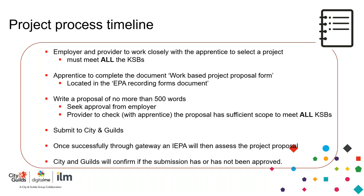Regarding the project process timeline: the employer and provider need to work closely with the apprentice to select a project. There's no point in the provider and apprentice working together if it can't be fulfilled or implemented within the employer's premises. It's really important that all three parties work closely together. The apprentice then completes the work-based project proposal form, located within the EPA recording forms document, where the project is highlighted within 500 words, mapped against the work-based skills criteria.